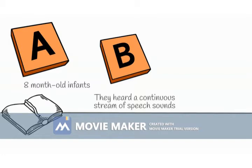Infants heard a continuous stream of speech sounds comprising four randomly ordered three-syllable non-sense words, with no pauses between the words and no pitch or duration-based cues to signal the location of word boundaries. What defined a given word, therefore, was the fact that the first syllable was always followed by a specific second syllable, and the second syllable was always followed by a specific third syllable. In contrast, the last syllable of each word was followed by a number of different syllables.